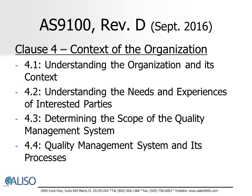Clause 4 outlines the requirements for creating an awareness of the context of the organization. This includes understanding the organization by determining external and internal issues that are relevant to its purpose and its strategic direction, and that affect its ability to achieve the intended results of its quality management system. Additionally, the organization shall understand the needs and expectations of interested parties, determine the scope of the quality management system, and shall establish, implement, maintain, and continually improve a quality management system, including the processes needed and their interactions in accordance with the requirements of the standard.